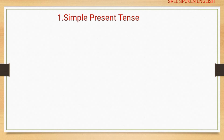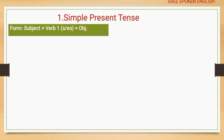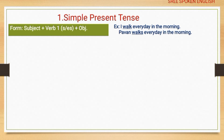The first tense is the simple present tense. The formula is: subject + verb base form (sometimes the verb takes -s or -es) + object. Example: 'I walk every day in the morning.'